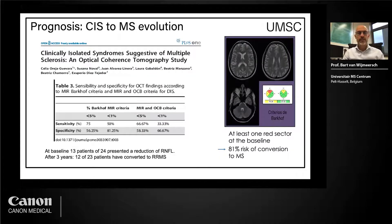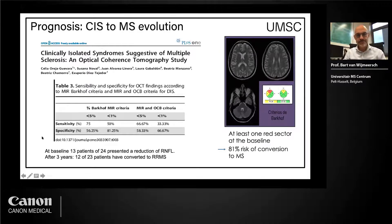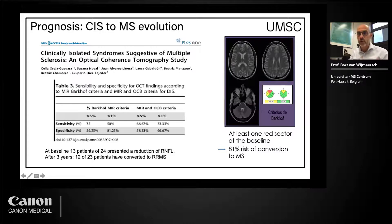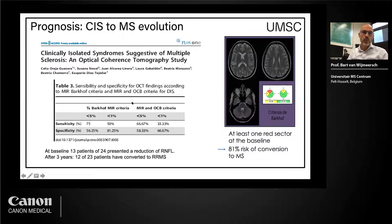You can use that by trying to do two things. First, doing prognosis on patients with a clinically isolated syndrome towards their MS evolution. This is a Spanish study from Madrid — they followed 24 patients, 30% having reduced retinal nerve fiber layer. What they showed was that if you have at least one red sector in the retinal nerve fiber layer thinning, then there is 80% risk of evolution towards MS.